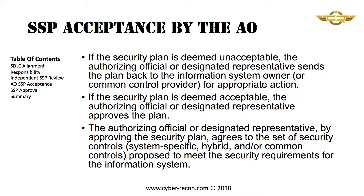However, if the security plan is deemed acceptable, the Authorizing Official or Designated Representative will approve the plan. By approving the security plan, the AO or AODR agree to the set of security controls in the SCTM that are proposed to meet the security requirements for the information system. By approving the SSP, the AO or AODR are approving the way the information system owner is planning on implementing the controls and the control set selected.